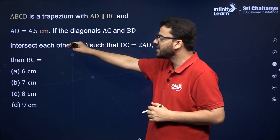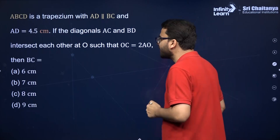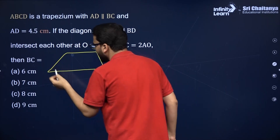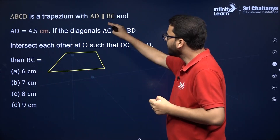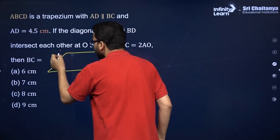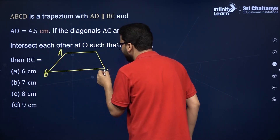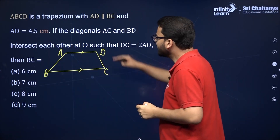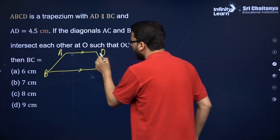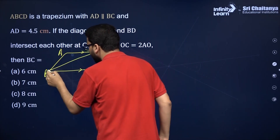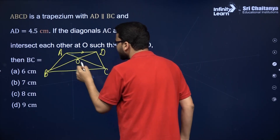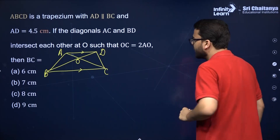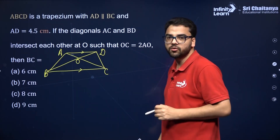ABCD is a trapezium in which AD is parallel to BC. Let's make a rough figure — a quadrilateral with one pair of opposite sides parallel. The diagonals intersect each other at point O, and it is also given that OC is equal to 2 OA.